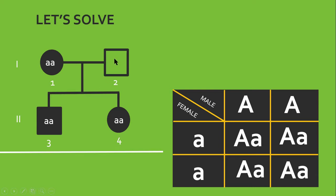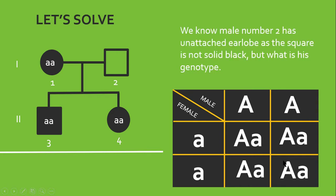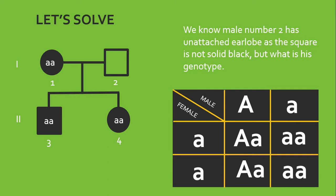But we still need to solve for individual two. Now, we know two doesn't have attached earlobe. It is detached and there are two possibilities. It could be homozygous or it could be heterozygous. So, we're trying homozygous here. But what we've realized is that we're going to be getting heterozygous offspring, which means that all these offspring will have detached earlobe. So, right away, we're sure that the father is not homozygous for the trait.